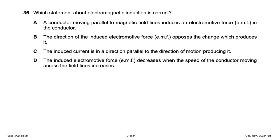Which statement about electromagnetic induction is correct? Option D — induced EMF decreases when conductor speed increases — is wrong (it increases). Option C — induced current is parallel to direction of motion — is also wrong. Option A — a conductor moving parallel to field lines induces EMF — is wrong; it must move perpendicular to cut field lines. So option B is correct: the direction of the induced EMF opposes the change that produces it.